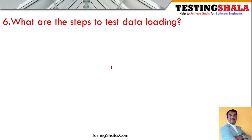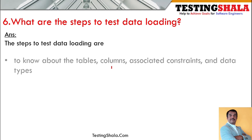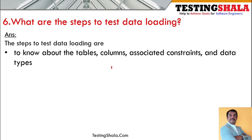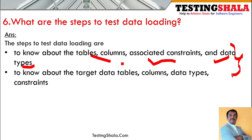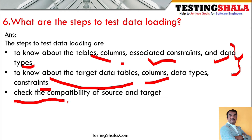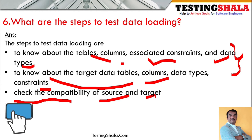The sixth question is: what are the steps to test data loading? First, you should know about the tables, columns, associated constraints such as primary key and foreign key constraints, and data types. The tester should also know about the target tables where data is being loaded, including the target table's columns, data types, and constraints. You should also check for compatibility of source and target, since we are picking data from the source and loading it into the target.